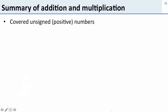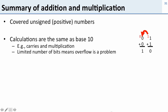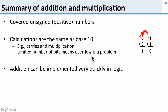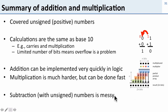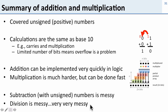Summary of addition and multiplication. We've talked about unsigned or positive numbers and how calculations are basically the same as in base 10 — the same carries and the same issues with multiplication. We talked about how a limited number of bits means overflow can be a problem: if we try to compute something needing more bits than we have, we get an overflow. We talked about how addition works without any problems, and multiplication is harder because you need a big array of adders, but we can still do it fast today. Subtraction was mentioned briefly as being difficult, and division is very messy so we don't really want to deal with division at all.